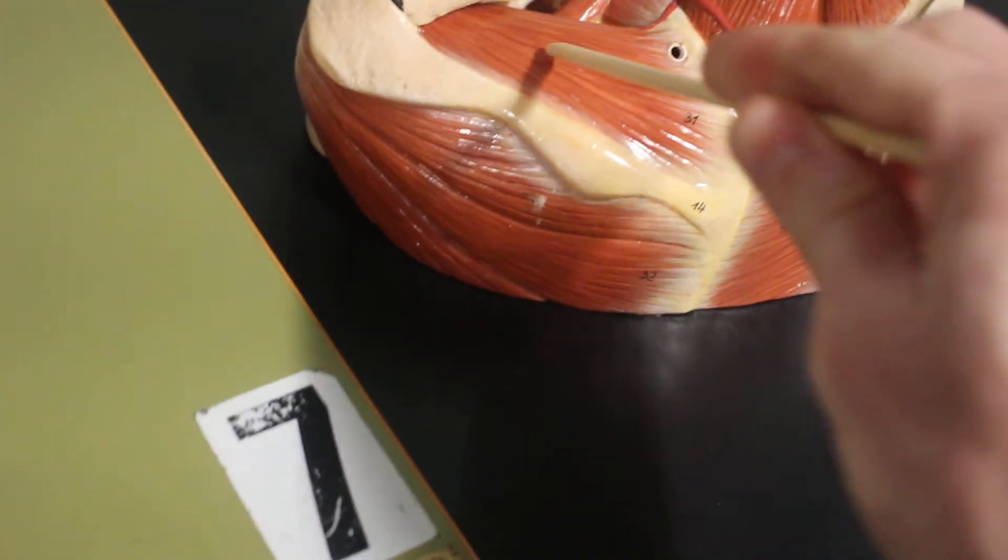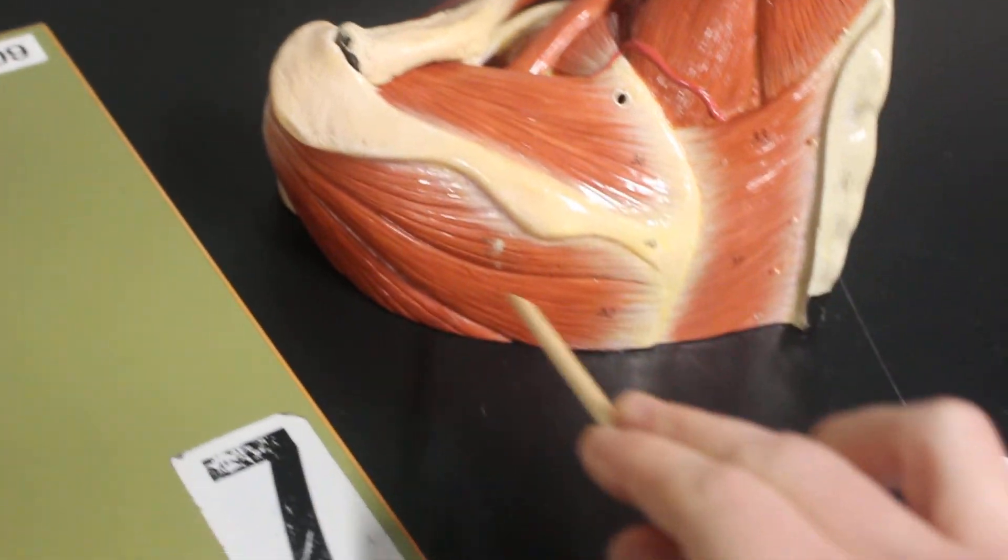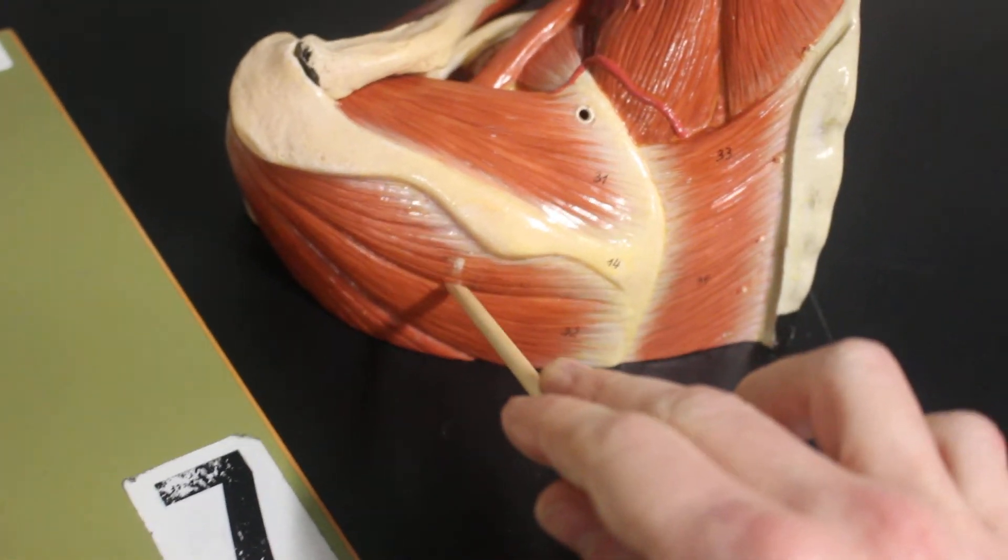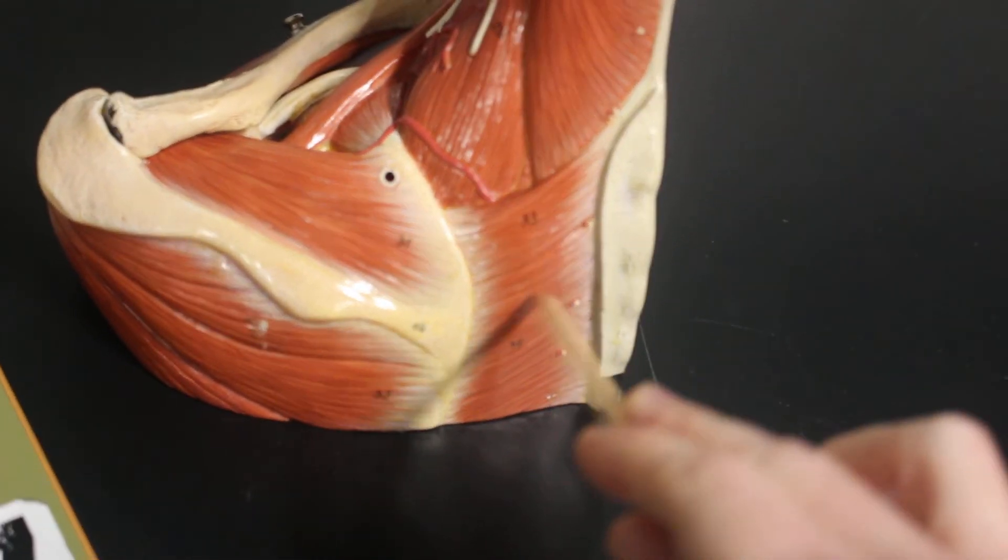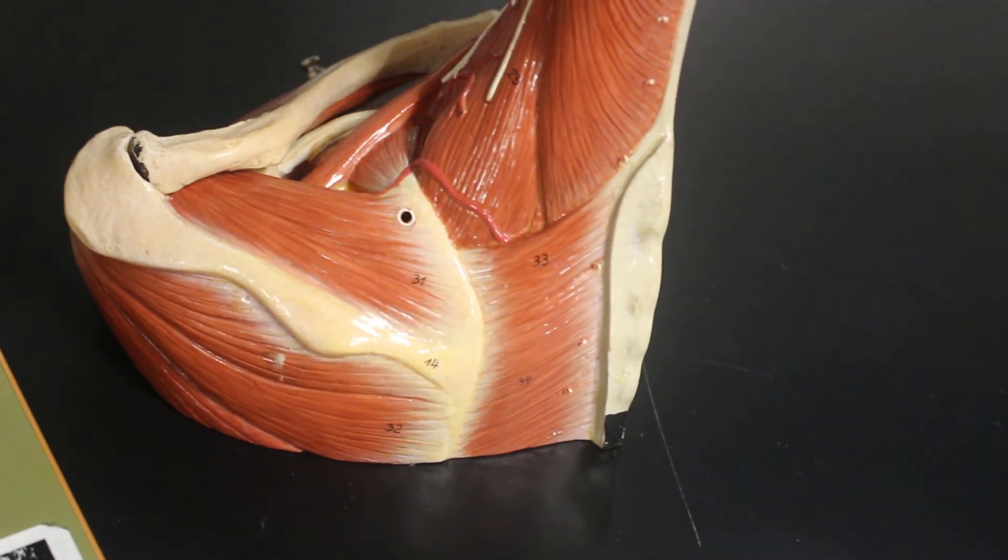Here is supraspinatus. Down here is infraspinatus. This is rhomboid major. Rhomboid minor. And that is it for this model.